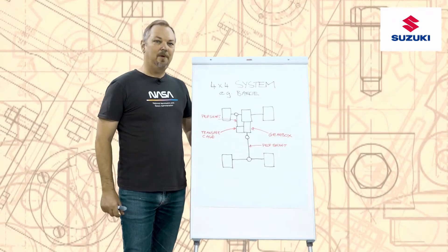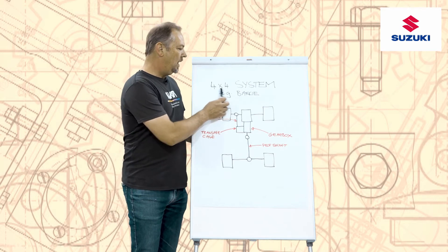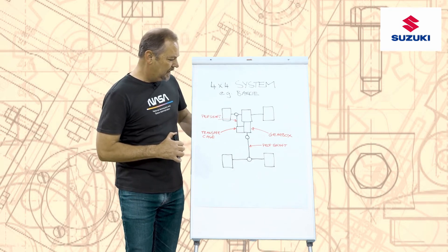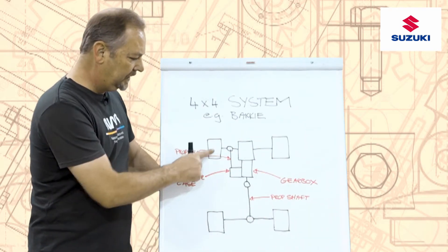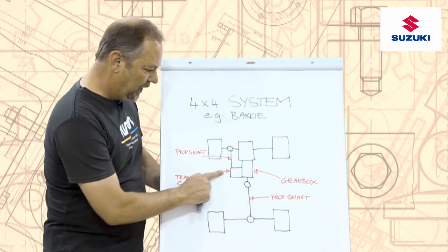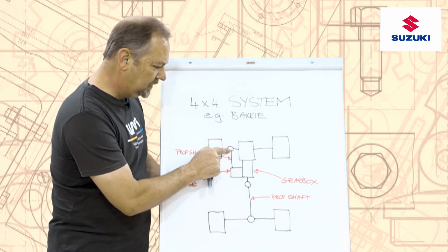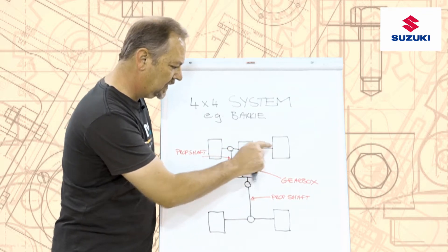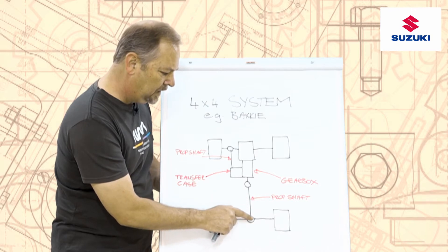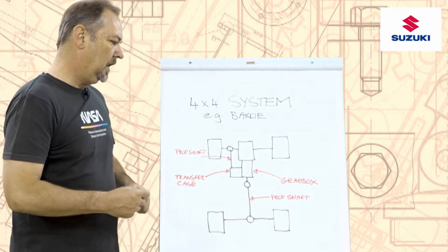Our first system is one that most of you are familiar with — the typical four-by-four system that we find on our four-by-four bakkies. Here's the basic layout. So here are my four wheels, here's my engine, my gearbox, and what we have over here is a transfer case. We have a prop shaft going to the front that goes through a differential, and our side shafts go to each wheel. Here's our centre differential with our prop shaft going to the rear, another differential, and then the side shafts going to our two wheels.